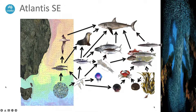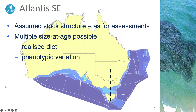It's fed by multiple currents from subtropical to subpolar and has quite an extensive food web coverage from inshore shelf areas through to deep waters, primarily represented through functional groups but with about 15 species-specific groups included as well, which are the main fisheries and conservation targets in the region. The assumed stock structures are the same as used in the assessments, with multiple size and age classes represented in this model, which is a bit of a computational load compared to most other Atlantis models.